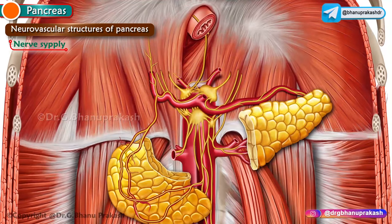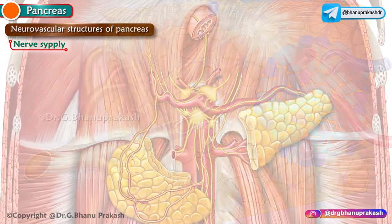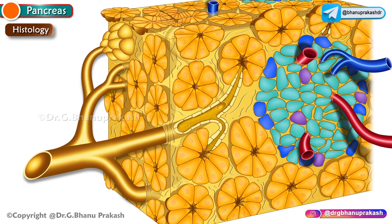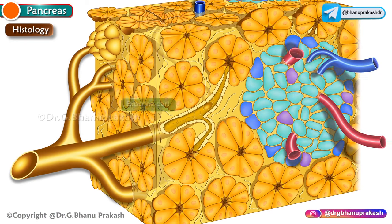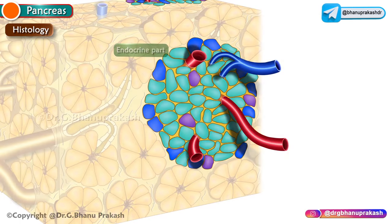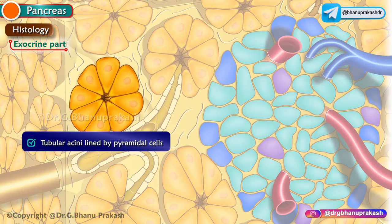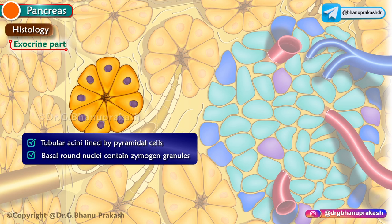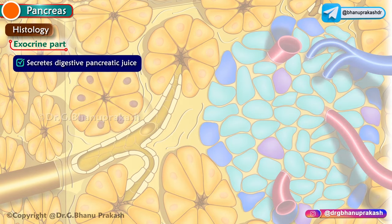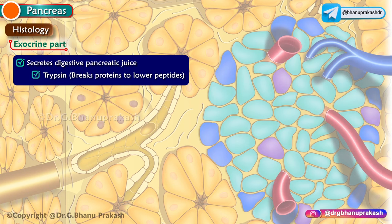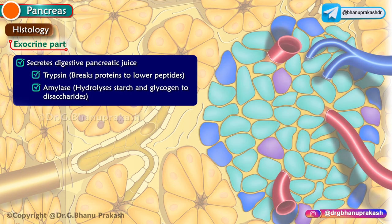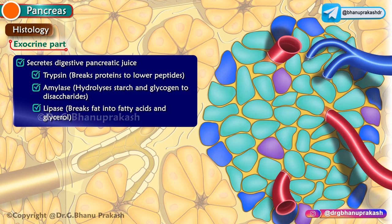The histology of the pancreas is studied under two headings: exocrine and endocrine. The exocrine part is made up of tubular acini lined by pyramidal cells with basal round nuclei containing zymogen granules. The exocrine part secretes digestive pancreatic juice containing enzymes such as trypsin, which breaks proteins into lower polypeptides; amylase, which hydrolyzes starch and glycogen into disaccharides; and lipase, which breaks fat into fatty acids and glycerol.